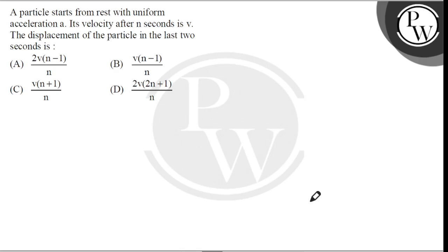Hello, let's read the question. A particle starts from rest with uniform acceleration a. Its velocity after n seconds is v. The displacement of the particle in the last two seconds is: if the initial velocity is zero, then the final velocity v is equal to zero plus a into n.